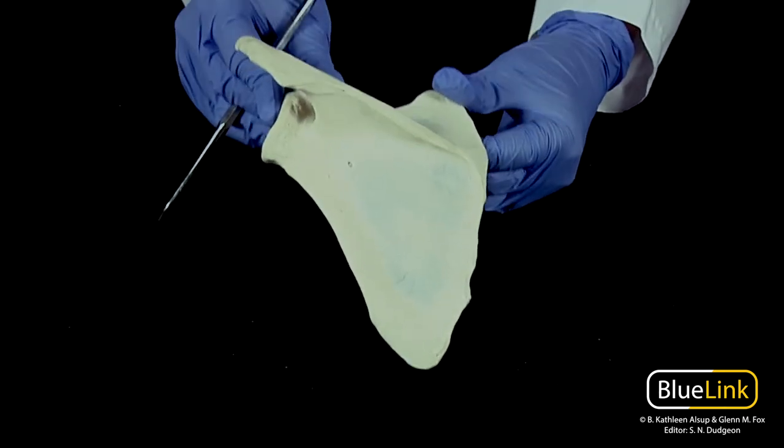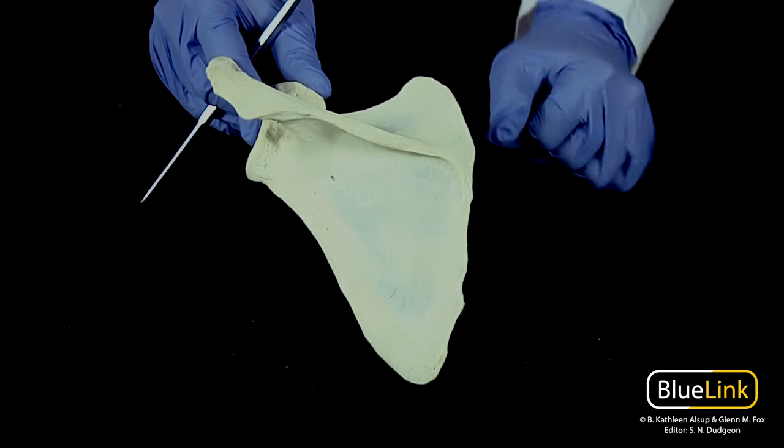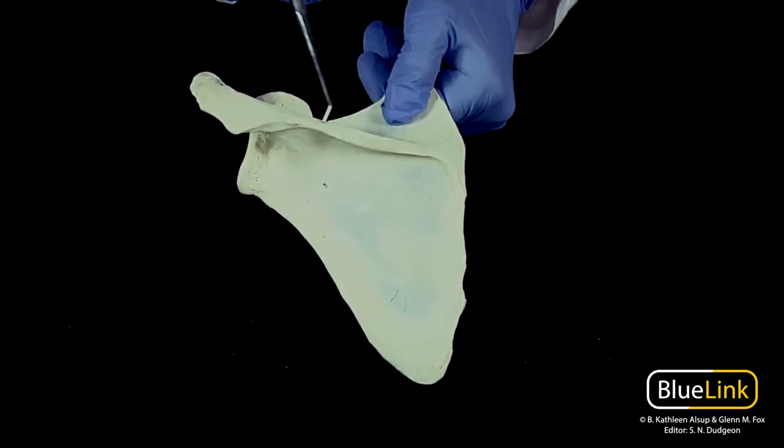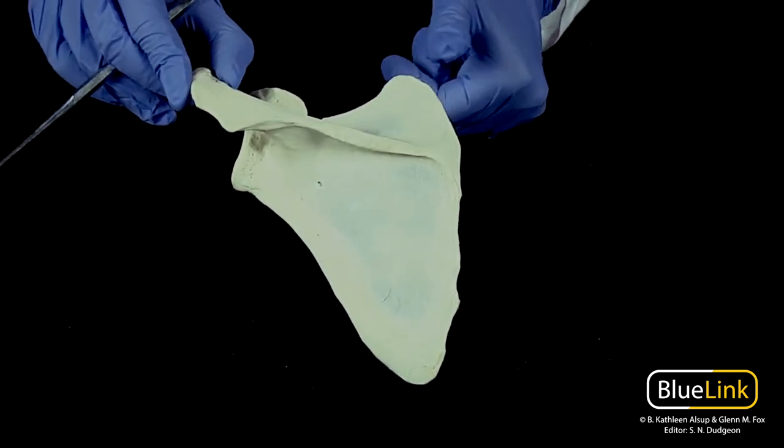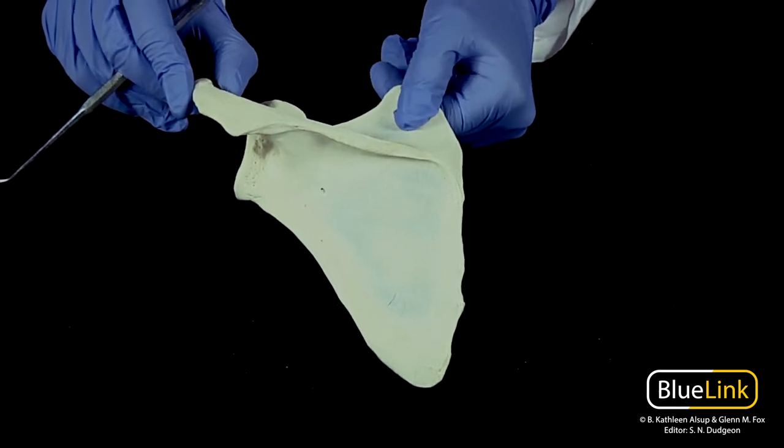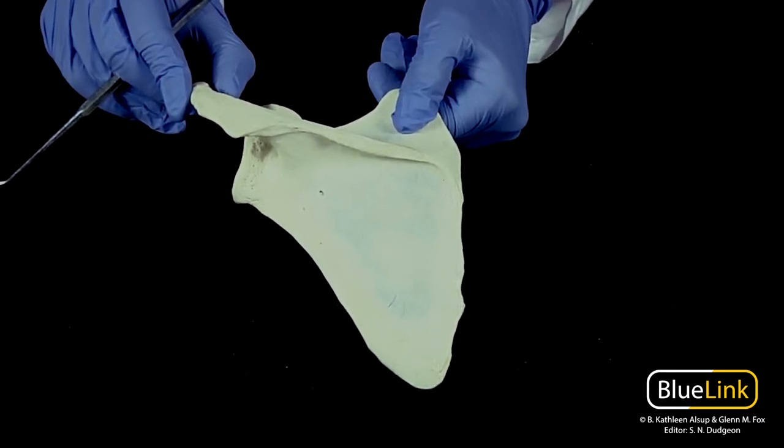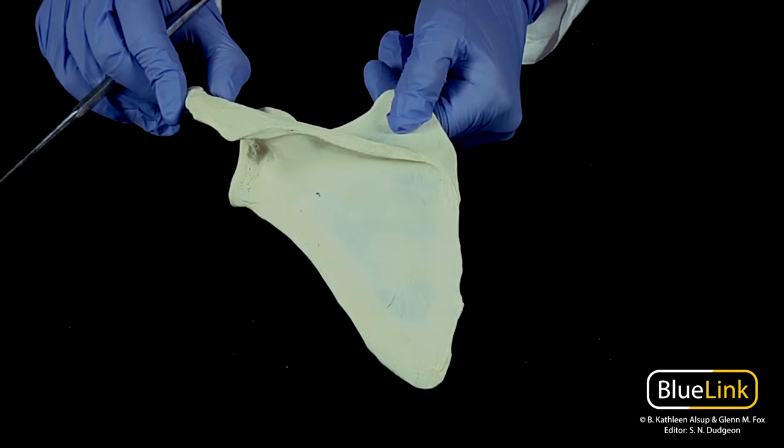Whereas if you look at a posterior view of the scapula, you can see this very prominent scapular spine here which is going to end in the acromion. You can actually palpate the acromion and spine when you pat yourself on the back.